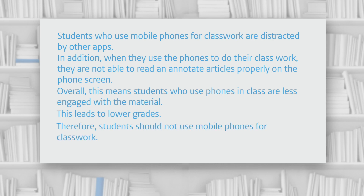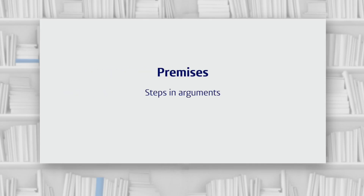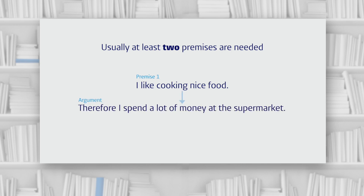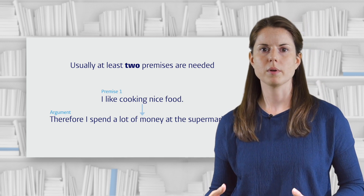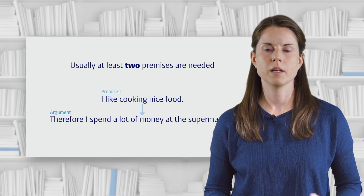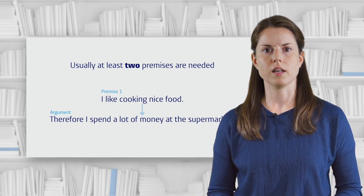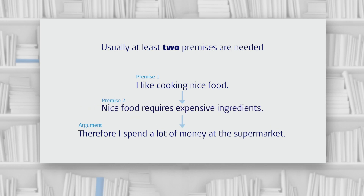The steps that are required to get to a logical conclusion — to make an argument logical — are called premises. Usually for a logical argument, you need at least two premises to logically lead to your conclusion. For example: I like cooking nice food, therefore I spend a lot of money at the supermarket. There's only one premise here: I like cooking nice food. I need another premise to make the logical step from cooking nice food to spending a lot of money. We need to add that nice food requires expensive ingredients — otherwise we haven't made it clear how nice food relates to higher prices.